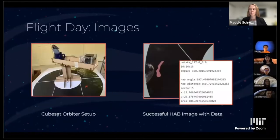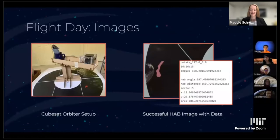Here you can see some images from our flight day. On the left is our CubeSat orbiter setup with the CubeSat, the orbiter, and counterweights — we used mugs and cornstarch depending on what was available. On the right you can see successful HAB images with data; these are examples of the images and data we received at the ground station and later pushed to GitHub.